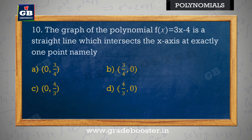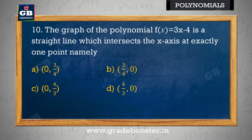The graph of the polynomial f(x) = 3x − 4 is a straight line which intersects the x-axis at exactly one point. Polynomial f(x) = 3x − 4 ka graph ek straight line hai jo x-axis ko bilkul ek point par intersect karta hai: a) (0, 4/3), b) (4/3, 0), c) (0, 3/4), d) (3/4, 0).